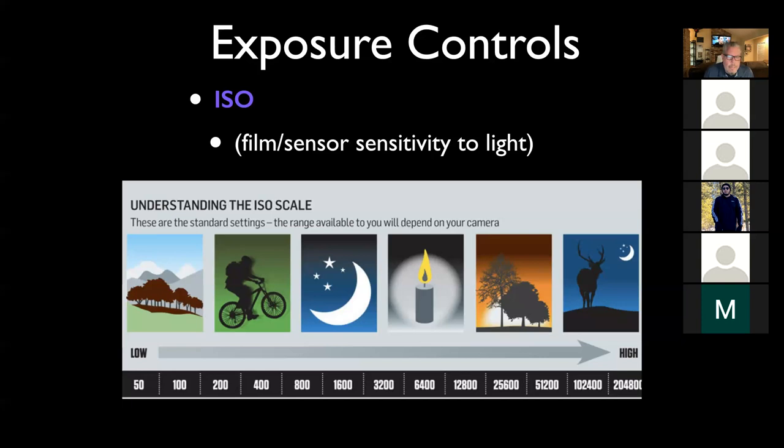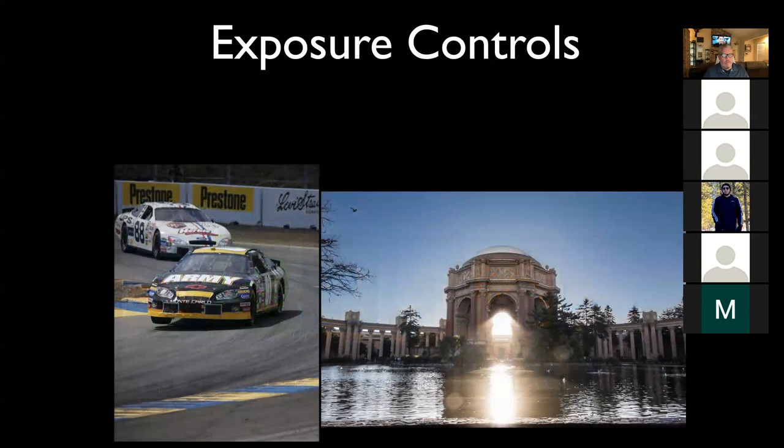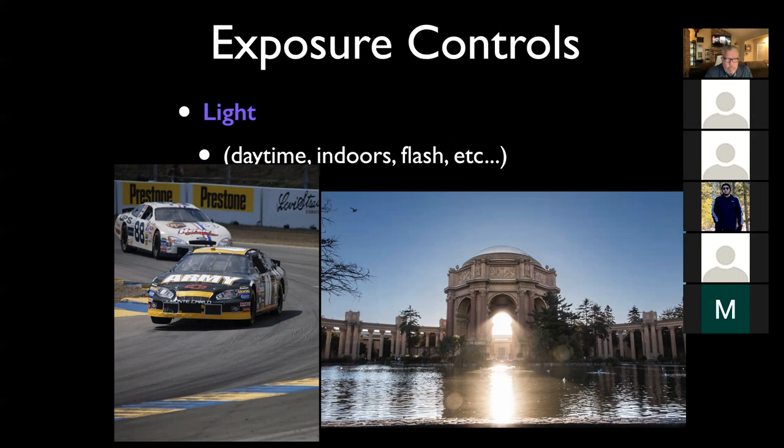The last exposure control is light itself. Is it daytime? Is it low light? Is it nighttime? The one on the left is at Sonoma Raceway at a NASCAR race - a bright sunny day, you can see all the shadows on the ground. The one on the right is sort of a twilight, lower light - a picture of the Palace of Fine Arts.